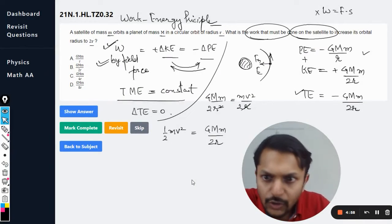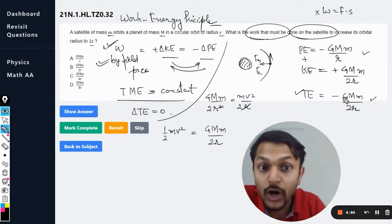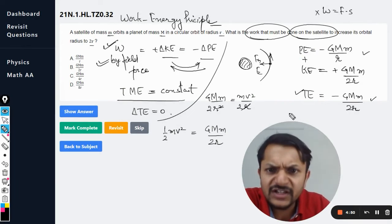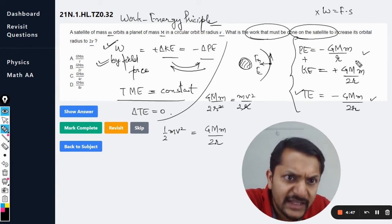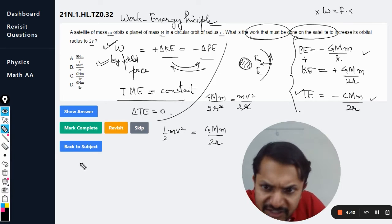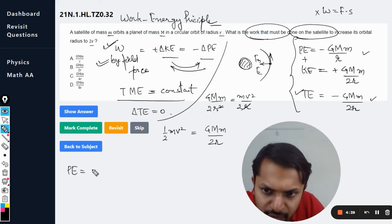Okay, so the total energy now is minus GMm by 2r. Now let us concentrate on this thing. There is another thing that I want to tell you - this condition is really very specific.